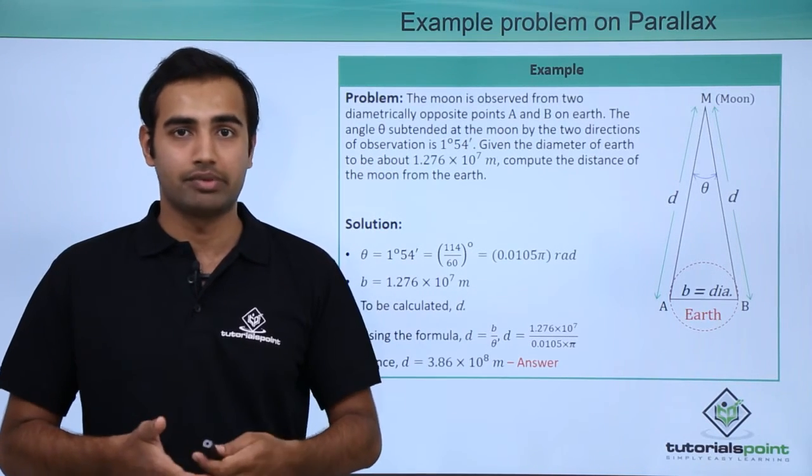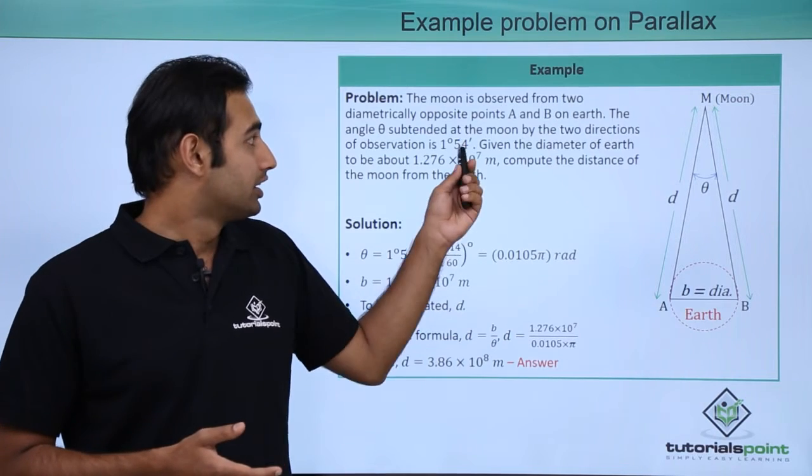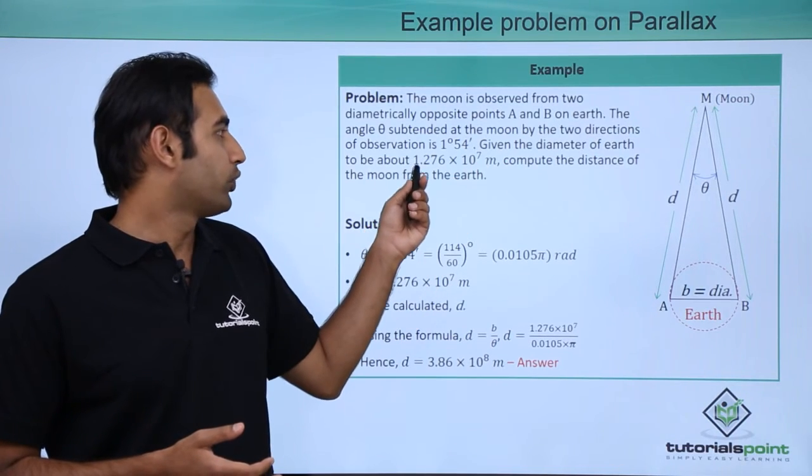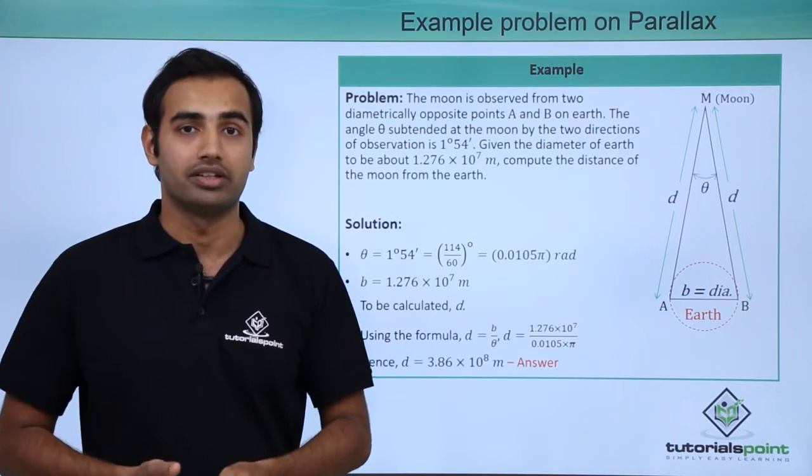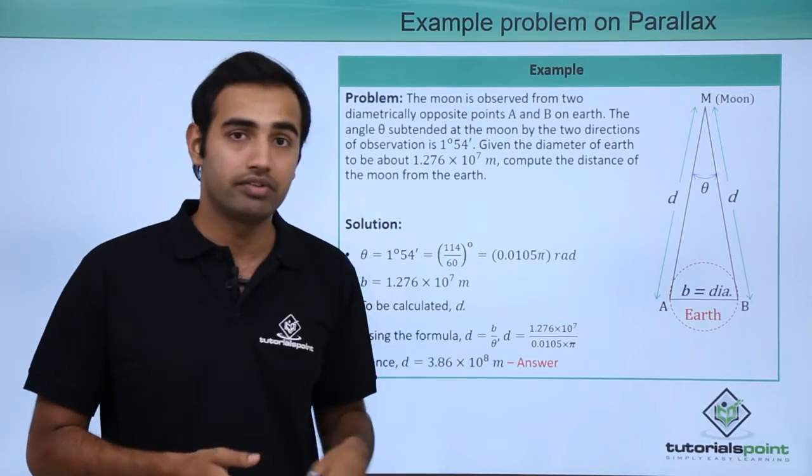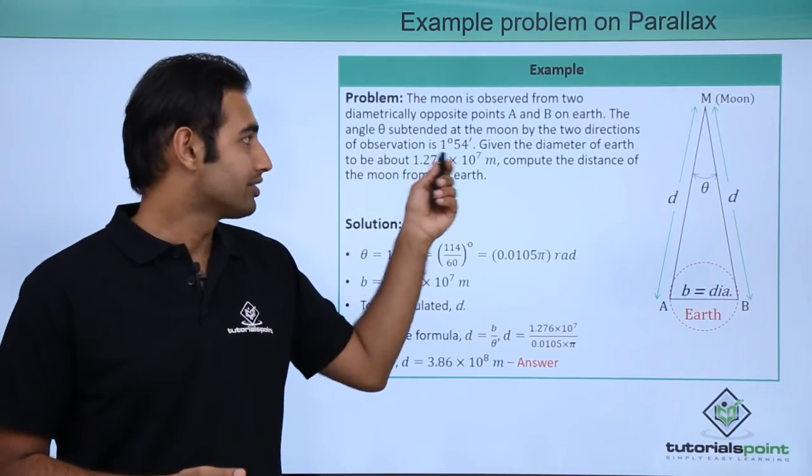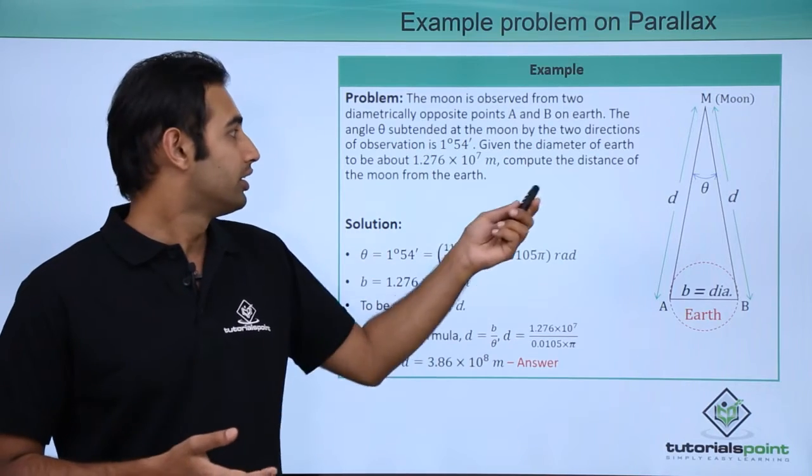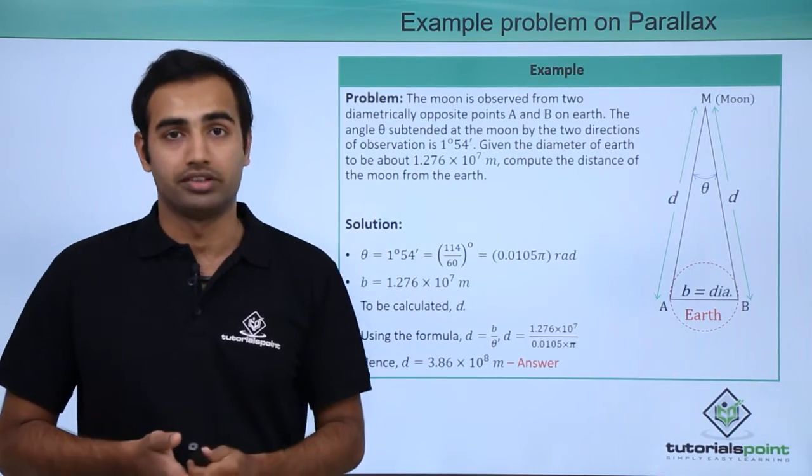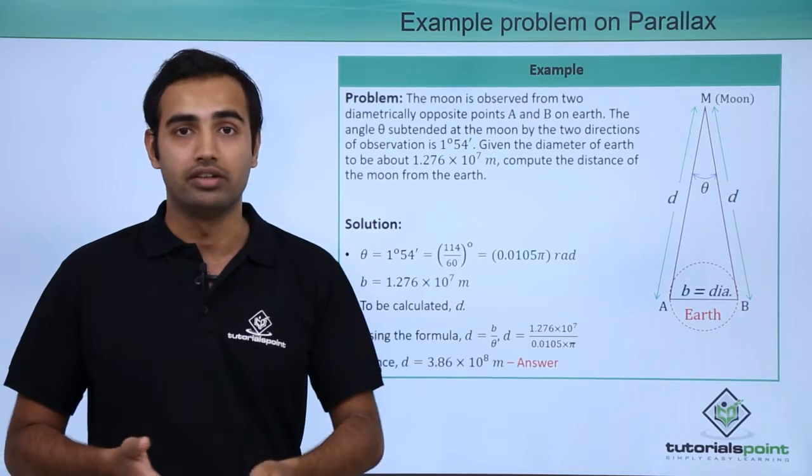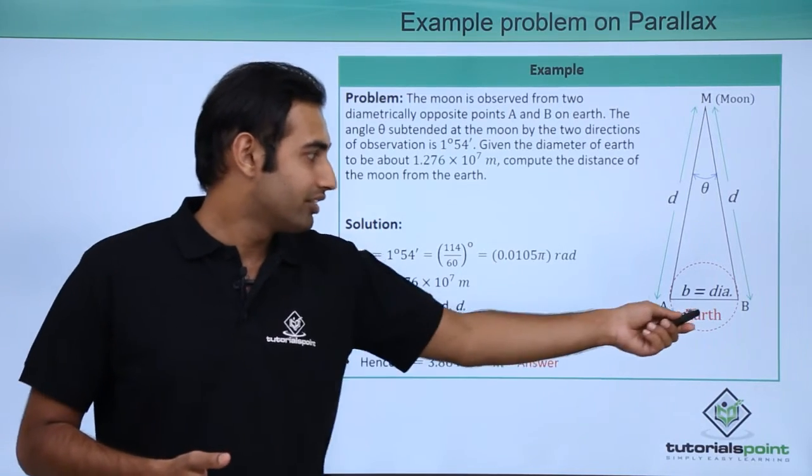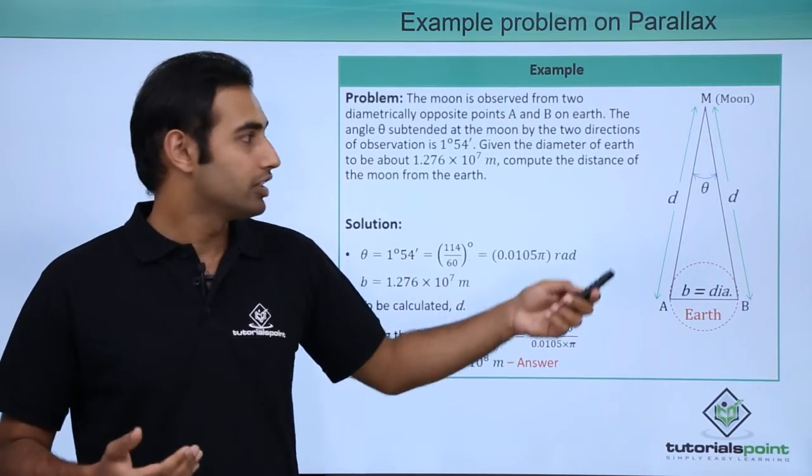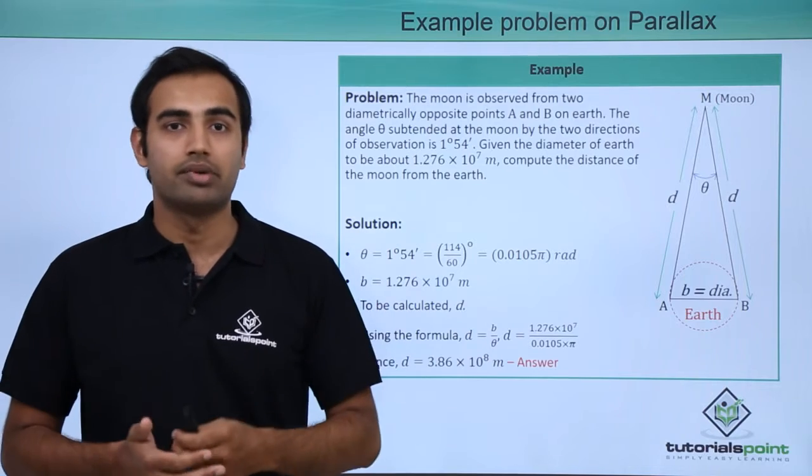Clearly this angle theta is my parallax angle. Given the diameter of earth to be about 1.276 into 10 raised to power 7 meters, the value of separation between the two points of observation is this much. Compute the distance of the moon from the earth. We are supposed to estimate the value of d. So in the problem we have been given the value of small b, we have been given the value of angle theta, we have to estimate the value of d.